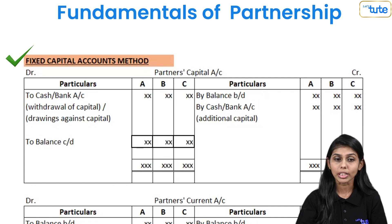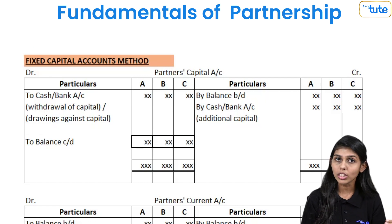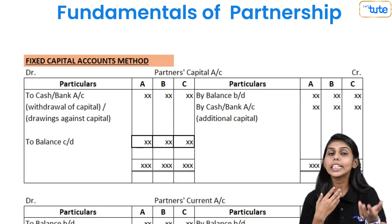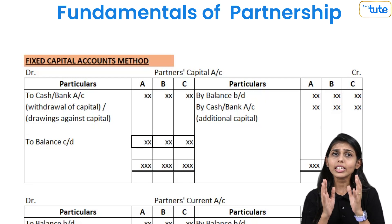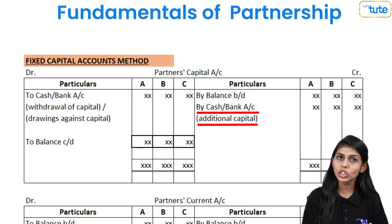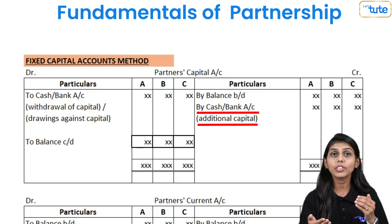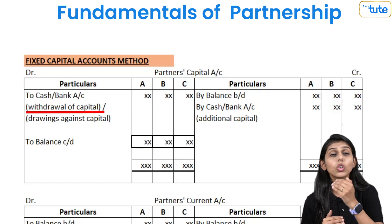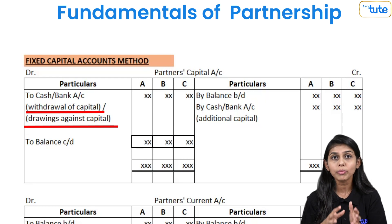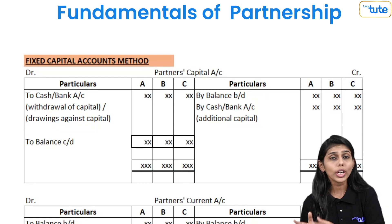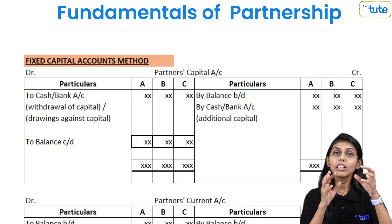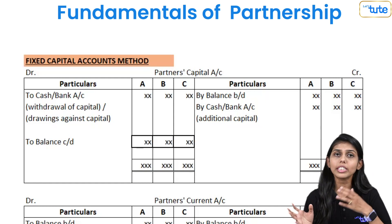In the fixed capital method, the first account maintained is the partner's capital account. Whatever capital the partner has introduced into the firm is recorded here, and this balance remains the same year after year, unless there is any additional capital introduced by the partner — which is credited — or any withdrawal of capital, which is debited. If there is no additional capital and no withdrawal of capital, then the opening balance is carried forward as the closing balance and remains the same year after year.